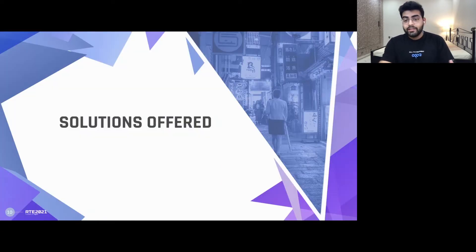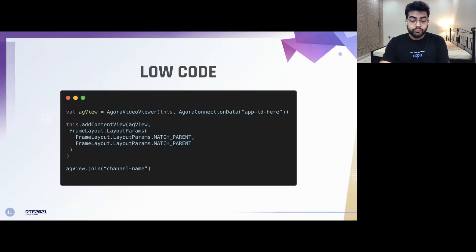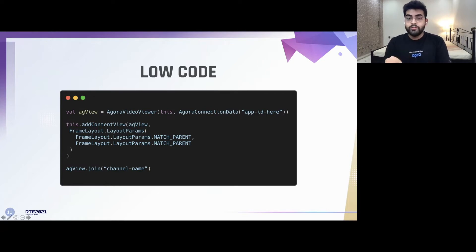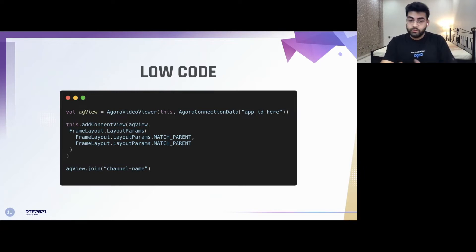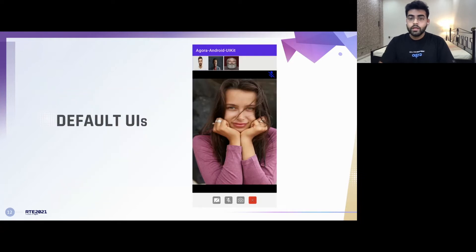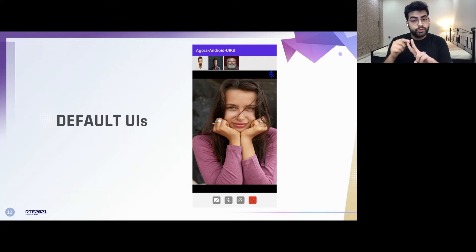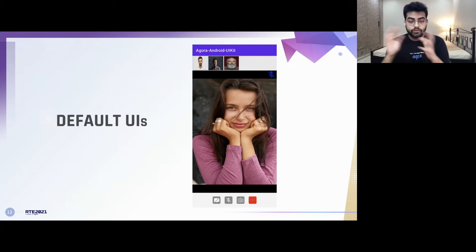Let's look at what exactly this UI kit can actually do. The first and foremost thing it offers is low code, and probably the biggest advantage is its low code itself. The three lines of code let you use the default UI of the application and start your video calling application with ease. The second solution that the UI kit offers is a default UI. With Agora UI kit, you get two default UIs — the floating layout and a grid layout where users appear in an increasing grid. With this UI, you also get four built-in buttons as well as state widgets to represent the state of your microphone and camera.